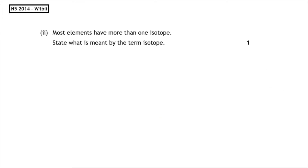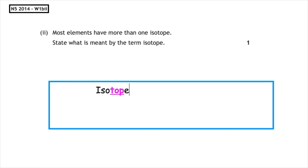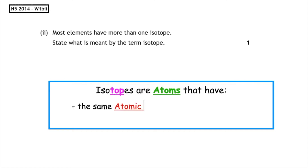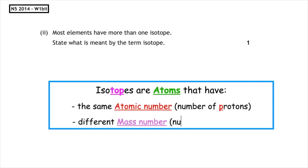This past paper question is from the National 5, 2014, written 1b part 2. Most elements have more than one isotope. State what is meant by the term isotope. Isotopes are atoms that have the same atomic number but a different mass number.